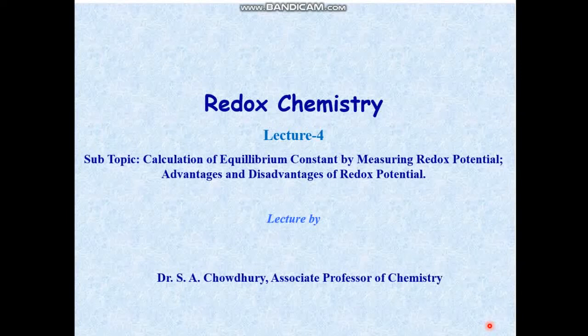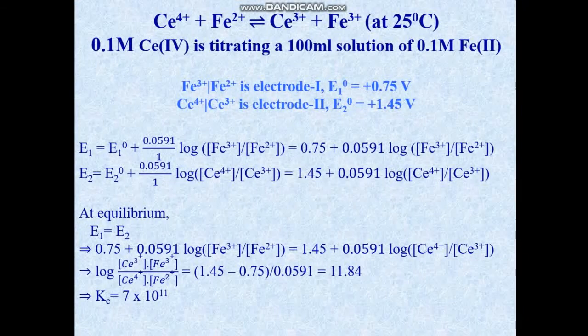From this discussion, we will come to know how we can conclude whether a reaction takes place or not among the reactants which are in the electrochemical series. We can also calculate, with the help of redox potential, the equilibrium constant of that particular reaction.